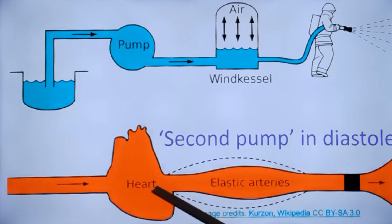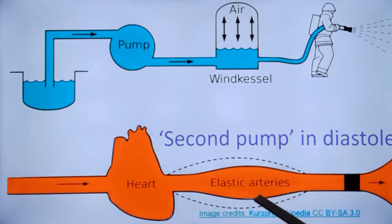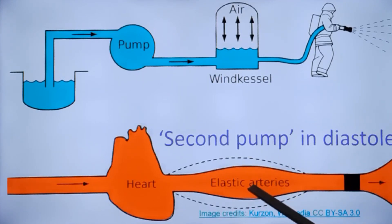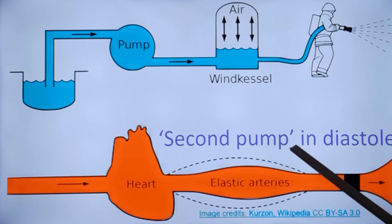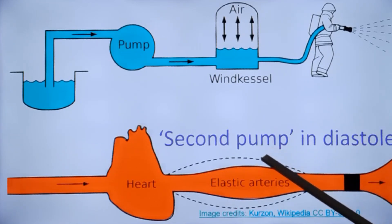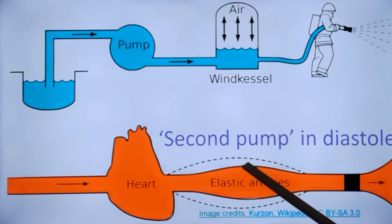During systole, more blood enters the aorta than what leaves the aorta because the aorta expands. This additional blood received during systole is released during diastole, so that the aorta acts as a second pump in diastole. This is very important for coronary perfusion, as the coronaries get perfused mainly in diastole.